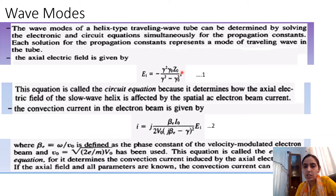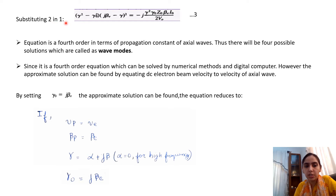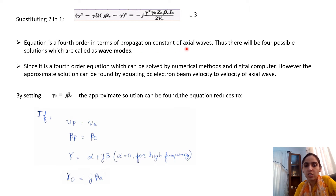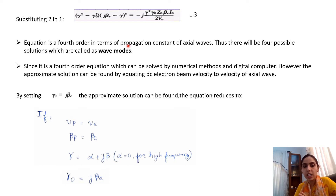To proceed, we substitute the second equation into the first — replacing i in the circuit equation with its value from the electronic equation — obtaining equation number 3. Equation 3 is a fourth-order equation in terms of the propagation constant gamma of axial waves. Since it is fourth order, there will be four possible solutions, which are called wave modes. We conclude that there are four different modes of propagation corresponding to four propagation constants.